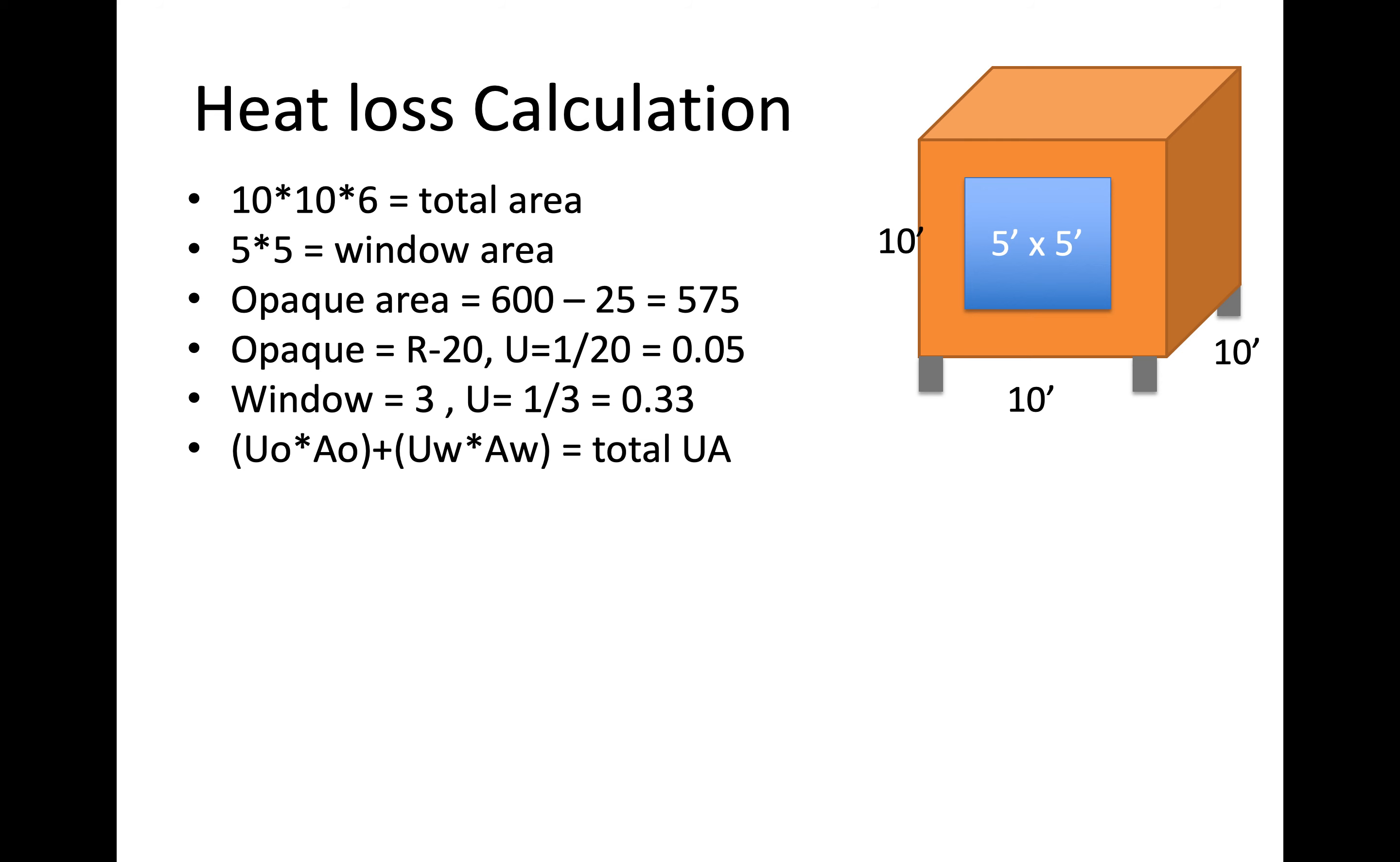So we're going to do an area weighted calculation. First we take the u factor for the opaque area times the area of the opaque area plus the u factor for the window area times the area for the window area and that's going to get us our total u factor times area. So if we plug those in, we can see that our total UA is 37.